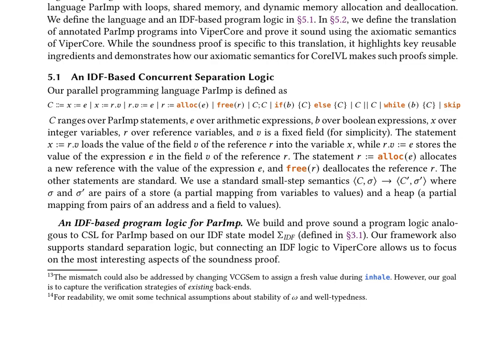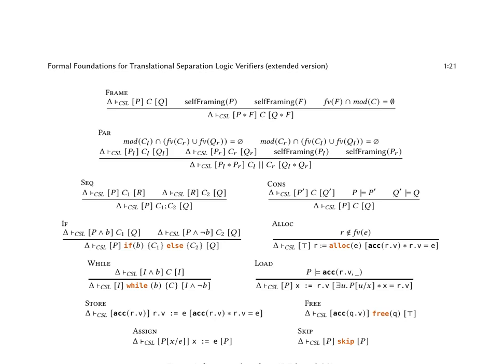In the following section, the authors focus on front-end soundness, showing how core IVL's operational semantics addresses challenge 3. They formalize and prove the soundness of a concrete front-end translation into Viper Core for a parallel programming language called Par-IMP. This language includes loops, shared memory, and dynamic memory allocation and deallocation. The paper defines an IDF-based program logic for Par-IMP, which is analogous to concurrent separation logic (CSL), and demonstrates how the framework supports standard separation logic by connecting an IDF logic to Viper Core.